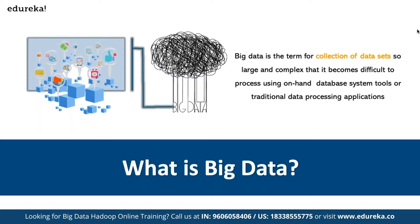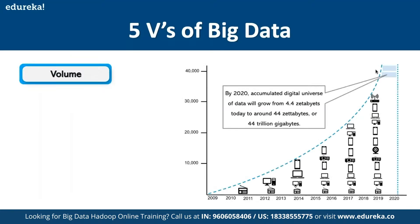There are five V's of big data. The first is Volume. By 2020, the accumulated digital universe of data was projected to grow from 4.4 zettabytes to around 44 zettabytes — or 44 trillion gigabytes. And in the next four years it is going to increase to 100 zettabytes on a per-month basis, showing exponential growth in data generated, largely thanks to the 4G revolution which happened back in 2016.